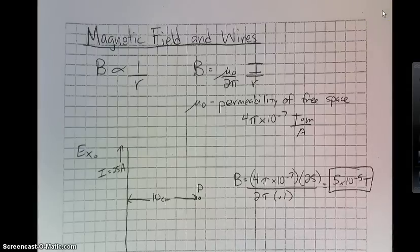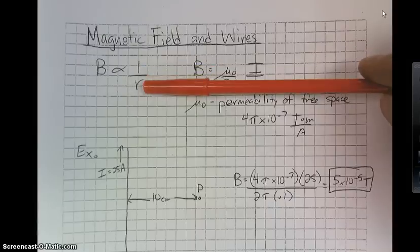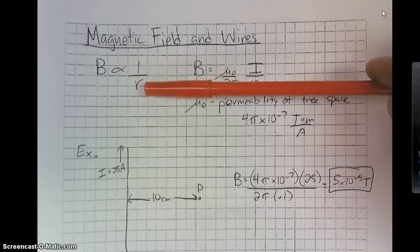Alright, so let's talk about magnetic fields and wires. There's a lab we could do where we look at the relationship between the magnetic field and the radius, or the distance you are away from a particular set of wire.